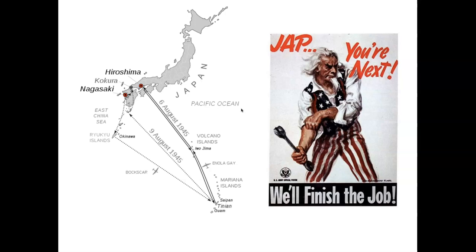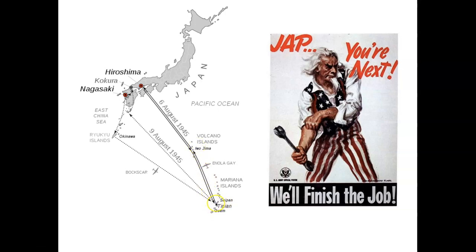By dropping the bombs in this fashion — only two days apart — we wanted Japan to think we had an unlimited supply of these horrible weapons. The Enola Gay took off from small islands nearby, since we couldn't fly from the United States. For the second bomb, the original target had too much cloud cover, so we went to Nagasaki instead. Now let's talk about the Little Boy bomb.